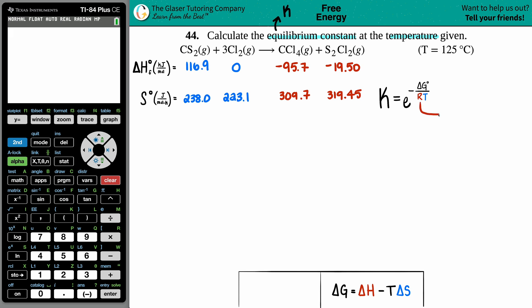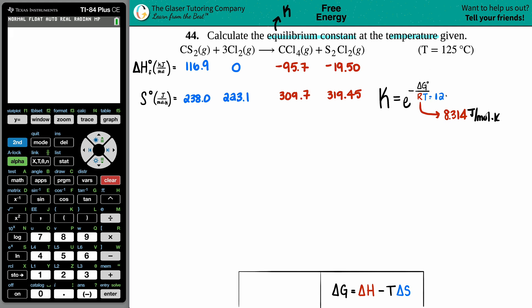The R value wasn't given but it's a constant we should memorize: R = 8.314 joules per mole times kelvin. Since R is in kelvin, the temperature must also be in kelvin. They gave us 125°C, so we convert: 125 + 273.15 = 398.15 K.